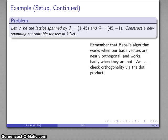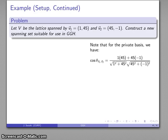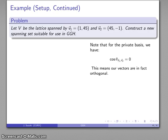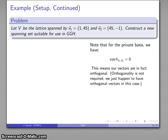Just a quick check: we may want to verify that our private basis is, in fact, orthogonal. It turns out that the cosine of the angle between them is zero, and the vectors are, in fact, orthogonal. Just as a quick note, we don't actually require that the private basis vectors be orthogonal. They just happen to be in this case.